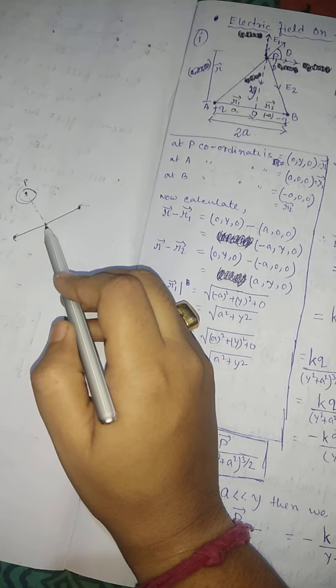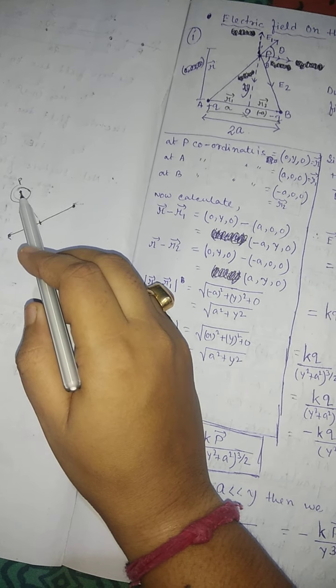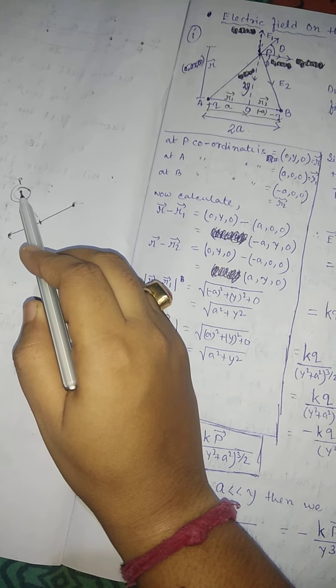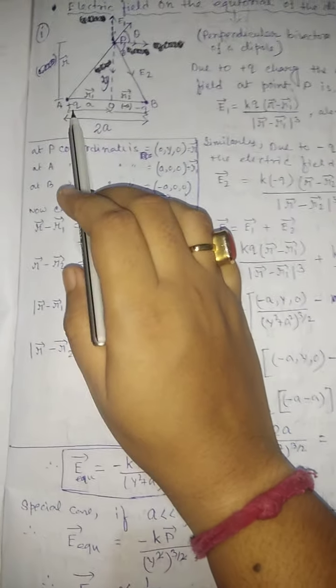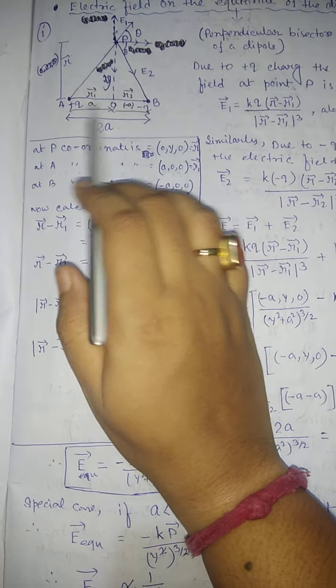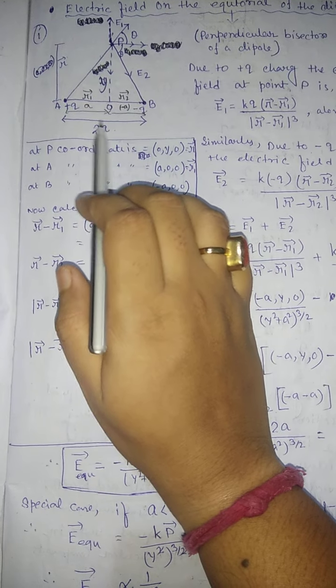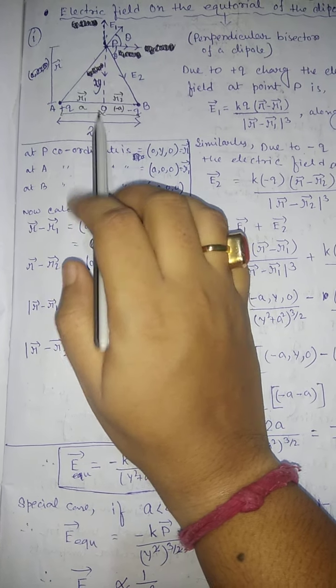The perpendicular bisector bisects the dipole into two equal halves, and from the midpoint we join a line to a point P. At point P, due to this dipole, we calculate the electric field — this is called the equatorial point. In the diagram, AB is an electric dipole separated by a distance of 2a.